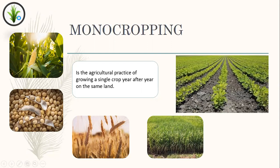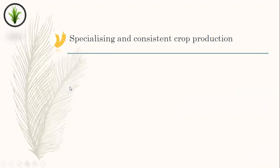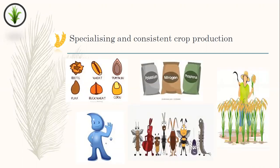Now I'm going to talk about the advantages and disadvantages of monocropping. I would like to start with advantages. The first advantage of monocropping is specializing and consistent crop production. Specializing in a single crop throughout the farm, the farmer can optimize the processes as the seed, fertilizer, water requirement, pest control and harvesting method will be the same throughout the farm.